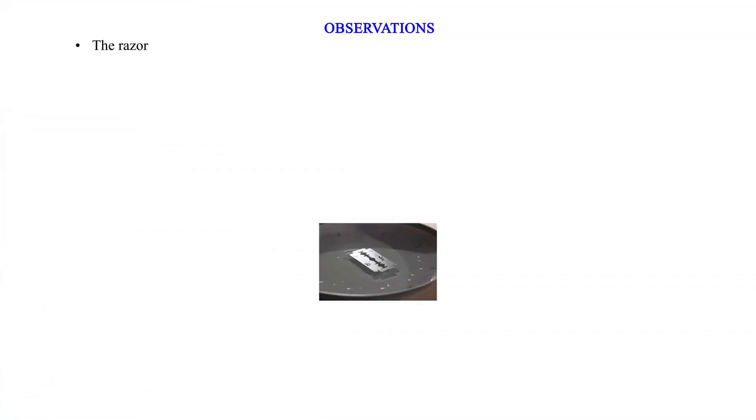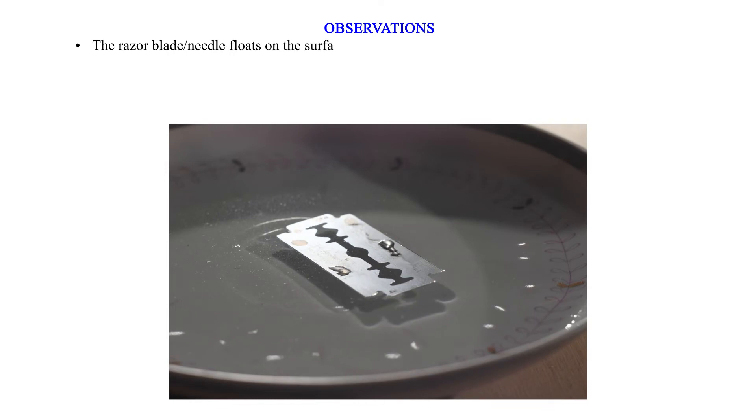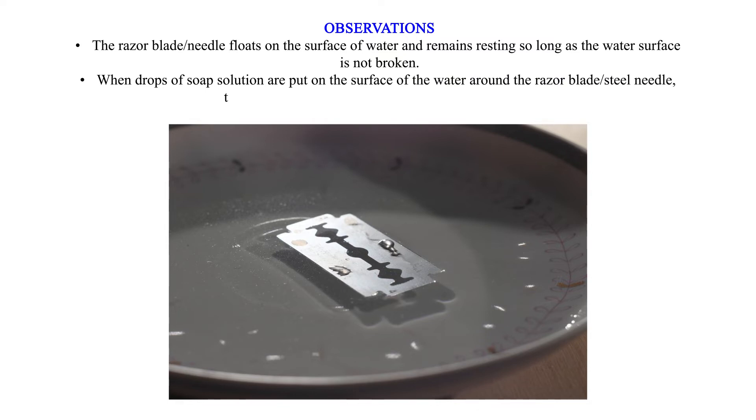Observations: The razor blade or needle floats on the surface of water and remains resting so long as the water surface is not broken. When drops of soap solution are put on the surface of the water around the razor blade or steel needle, the razor blade or steel needle sinks after a few minutes. Depressing the razor blade highly allows it to sink very quickly.